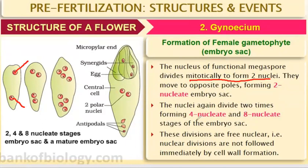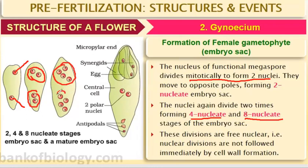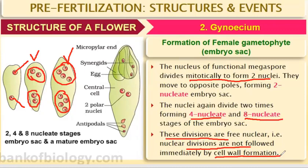The nuclei again divide two more times, forming a four-nucleate stage and then an eight-nucleate stage. After the first mitosis we get two cells, then four cells, then eight cells — giving us the eight-nucleate embryo sac. These divisions are free nuclear divisions: the nucleus divides but no cell walls are formed between them.